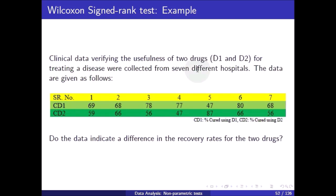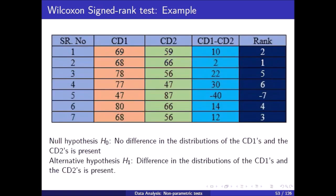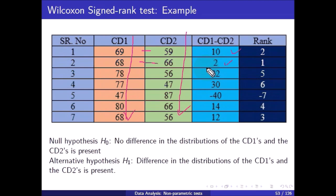Example 2: Clinical data verifying the usefulness of two drugs D1 and D2 for treating a disease were collected from seven different hospitals. The question is whether the data indicate identical or different recovery rates for the two drugs. The differences are: 69 minus 59 = 10, 68 minus 66 = 2, 78 minus 56 = 24, 47 minus 87 = minus 40, and so on.